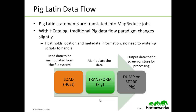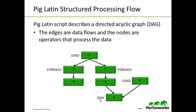As you can see from the diagram, we can read data to be manipulated from the file system with HCatalog. We can manipulate the data with PIG and output the data to the screen or store it for processing, also using PIG. PIG Latin scripts describe a directed, acyclic graph where the edges are data flows and the nodes are operators that work on the data.